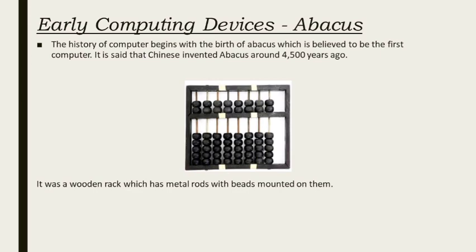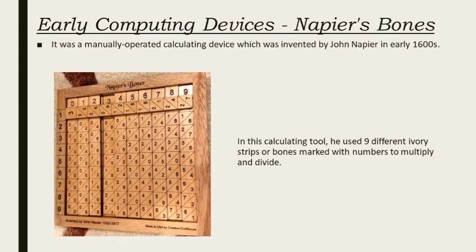The next early computing device is called Napier's Bones. It was a manually operated calculating device which was invented by John Napier in the early 1600s. In this calculating tool he used nine different cylindrical strips and bones marked with numbers to multiply and divide.